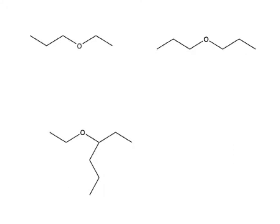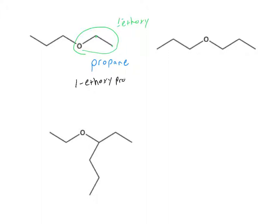Let's look at some examples. In our first example, our carbon chain is three carbons long, and so our root is going to be propane. Then we look to our ether substituent, which consists of two carbons, and so this will be an ethoxy substituent. Finally, we look at our numbering and we see that our ethoxy substituent is coming off our first carbon, leading us to a final name of 1-ethoxypropane.